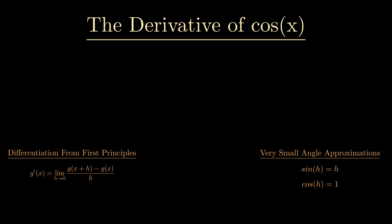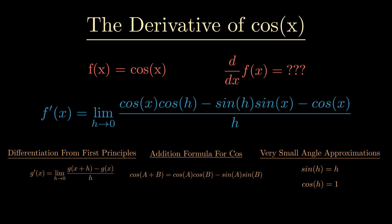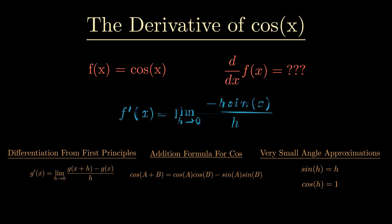Moving on to the derivative of cos, we already have all the formulas we'll need. The only new one we'll need is the addition formula for cos. The process of expansion and simplification now is much faster and intuitive. Please give this a try yourself. We're finally left with the derivative being negative sine.